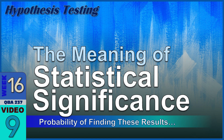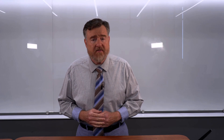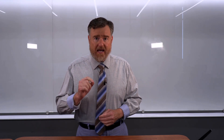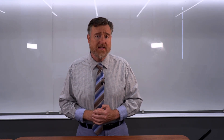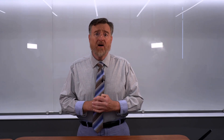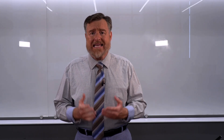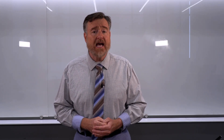As we have been learning hypothesis testing, you've heard me go on at length about statistically significant differences. We determined that a result is statistically significant if we calculate a p-value less than 0.05. But what does that actually mean? What does p less than 0.05 really tell us?